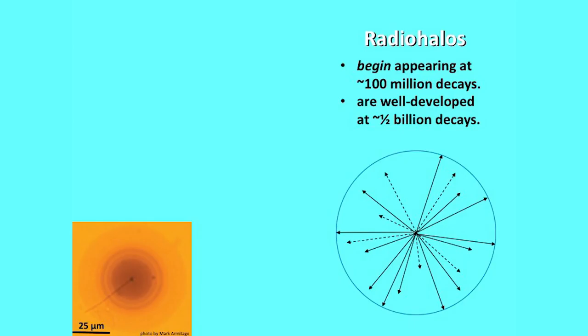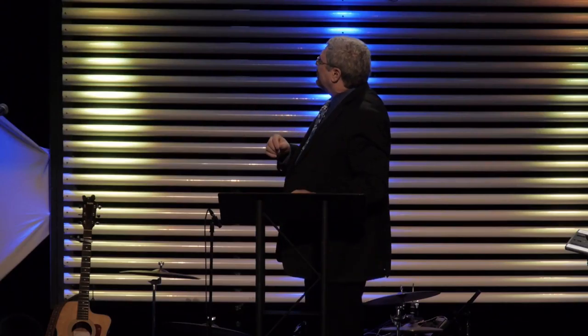Radio halos begin developing like an old-fashioned photograph — gradually the picture appears. At first you can't see individual alpha decays; it takes hundreds of millions of decays to do enough damage for you to see the halo. At about 100 million decays we estimate it begins to show up — you can begin to see at least the darker rings. By about 500 million decays you've got a well-developed, easily discernible set of rings.